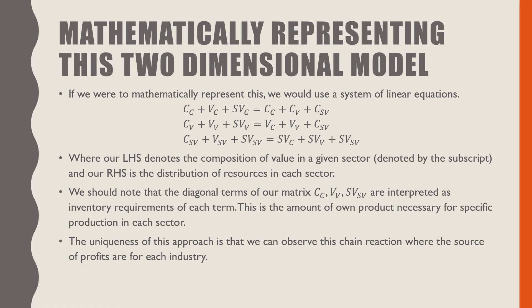We should note that the diagonal terms, such as the constant capital used in the production of constant capital, the value used in the production of wages, and the profits that are used in the production of surplus value, are interpreted as inventory requirements of each term. This is the amount of home production necessary for production in each sector.